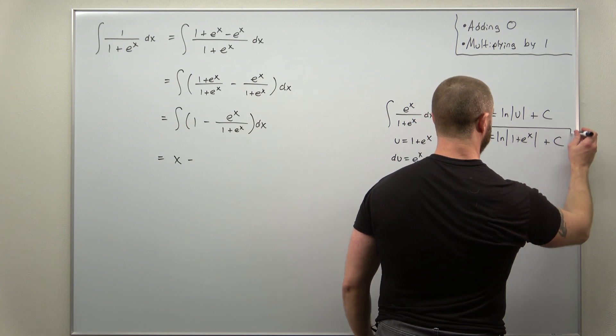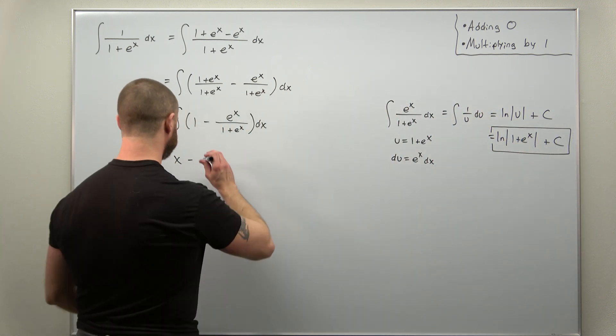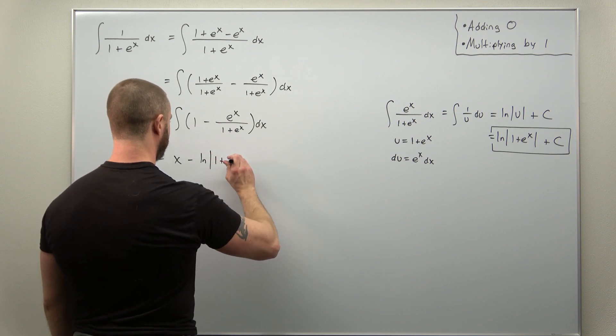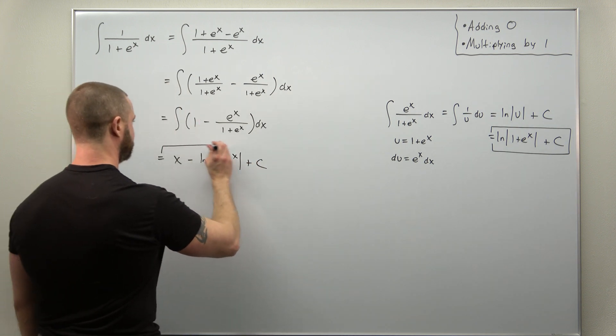And that came out to natural log of 1 plus e to the x. So we get minus natural log of 1 plus e to the x plus c.